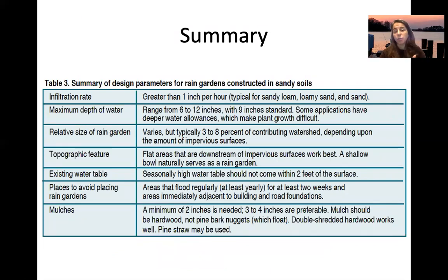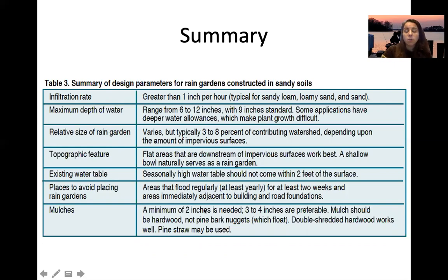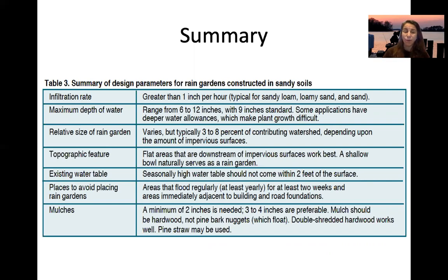Summary specs: infiltration greater than one inch per hour; depth ranging six to twelve inches, with nine inches as standard; typically three to eight percent of the watershed, up to ten percent of impervious surface area. Flat areas downstream of impervious surfaces work best, with a naturally shallow bowl shape. The seasonal high water table should not come within two feet of the bottom of the rain garden.